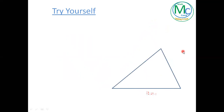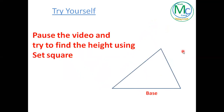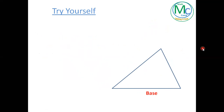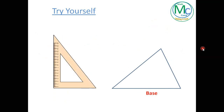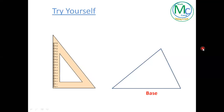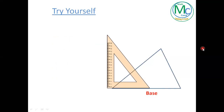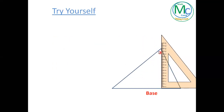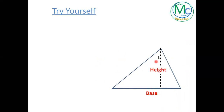Question number two — try this one now. Check your answer: the base of the set square should be over the base of the triangle, then stop when the height side touches the vertex. Draw this line — and this line is going to be the height for this base.